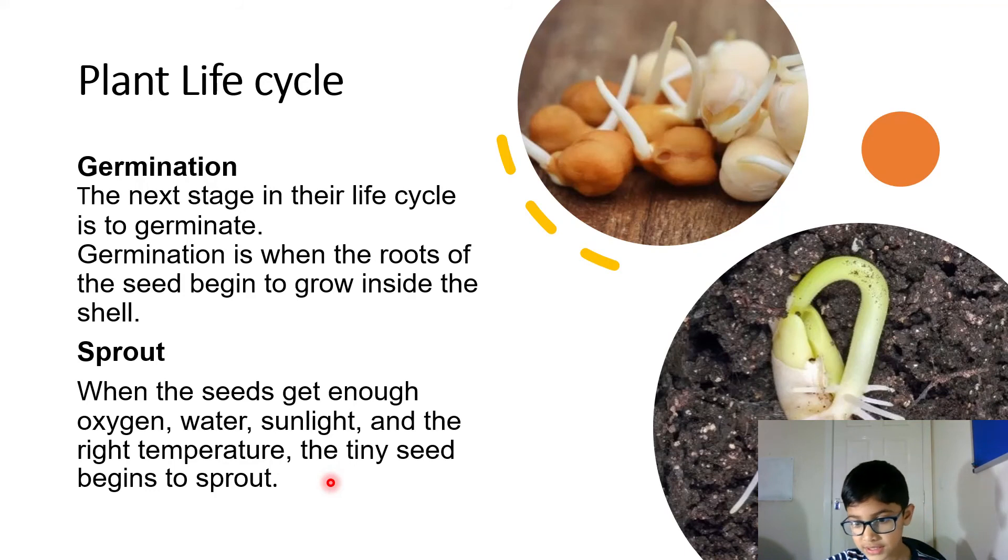Sprout. You can see a picture of a sprout. When the seeds get enough oxygen, water, sunlight and the right temperature, the tiny seed begins to sprout. You can see this one is just sprouting.